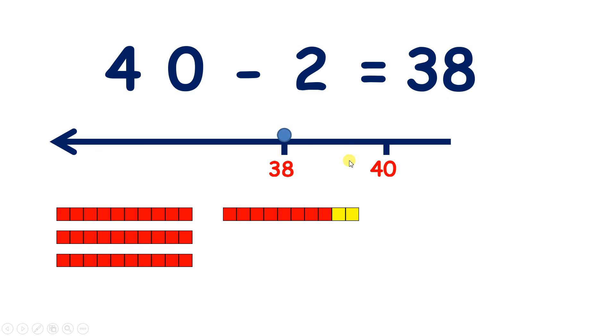So it's really important to remember, when we're subtracting units from a multiple of 10, the tens digit will be 1 less, so here 3 is 1 less than 4, and the units digit will be the number bond to 10. So with 2, 8 is the number bond to 10, so we have 8 units.